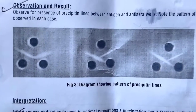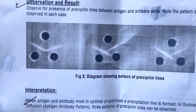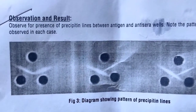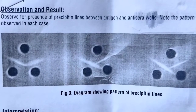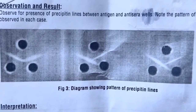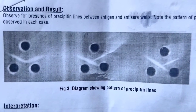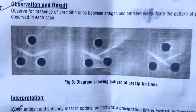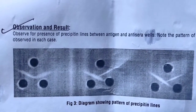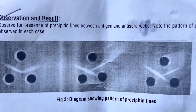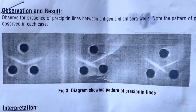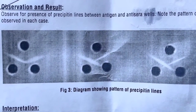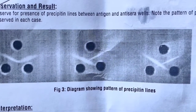After incubation, observe the pattern formed between antigen and antiserum wells. If pattern x, or pattern of identity, is observed between the antigens and the antiserum, it indicates that the antigens are immunologically identical. If pattern y, or pattern of partial identity, is observed, it indicates that the antigens are partially similar or cross-reactive. If pattern z, or pattern of non-identity, is observed, it indicates that there is no cross reaction between the antigens — that is, the two antigens are immunologically unrelated.